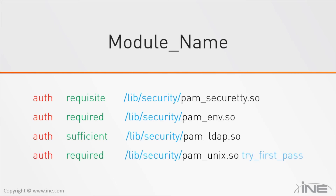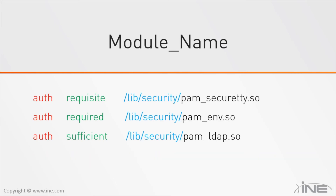The order here is very important. If sufficient comes before required and sufficient passes, it will skip the remaining modules — meaning a subsequent required failure has no impact, because authentication already succeeded. Until this point we understood the concept of PAM, how it works, and the configuration file format. Now, which programs use PAM? Any program that needs to authenticate users, control logins, allocate resources, or update login credentials can benefit from using PAM.